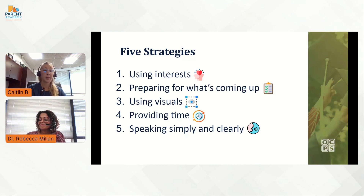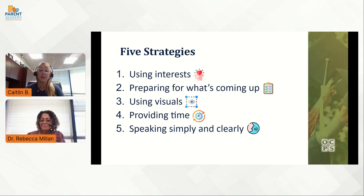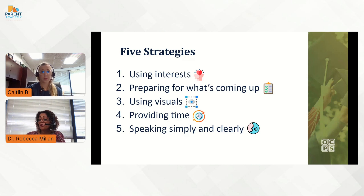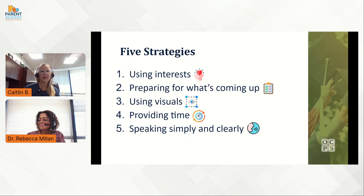Our fourth step: provide time. Providing time can have many different meanings. Individuals on the spectrum may need more time to listen and then respond when you talk with them. Another way to provide time is when an individual has difficulty regulating their emotions — after ensuring that they're safe, you may want to provide them time without talking so they can reflect. Finally, speaking simply and clearly means that you are communicating with the individual in a way that they can understand. Las personas en el espectro pueden necesitar más tiempo para escuchar y luego responder, especialmente cuando tienen dificultad para regular sus emociones. Permítale un tiempo en silencio sin hablar con ellos.